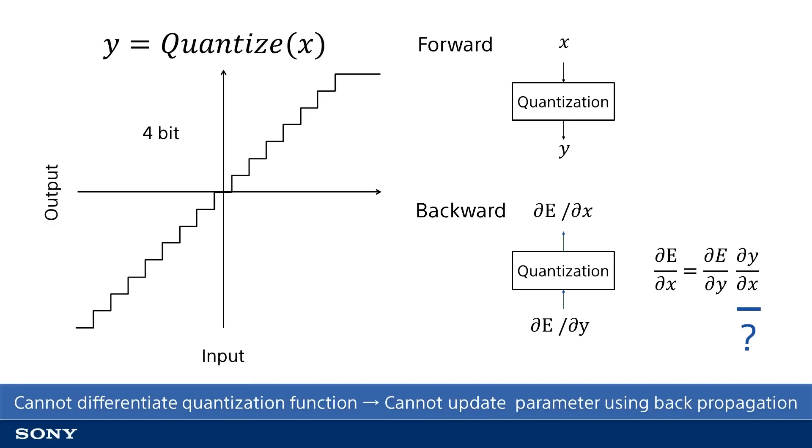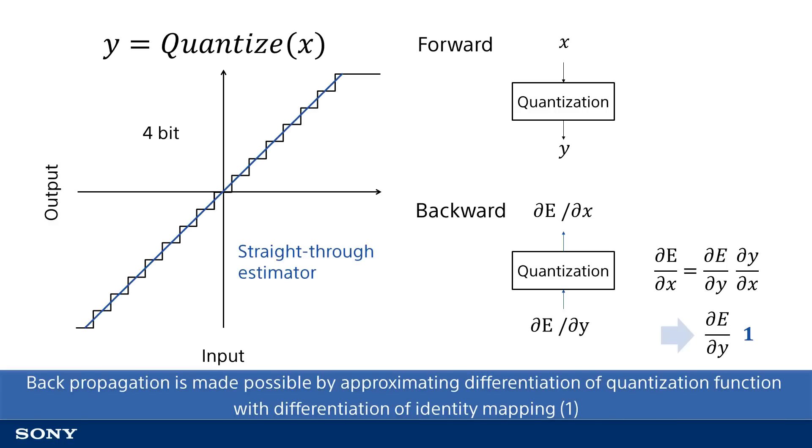The solution to this issue is the technique of using a straight-through estimator to replace differentiation of the quantization function with differentiation of an approximate function. If the approximation of the quantization function is an identity mapping that doesn't really do anything, this differentiation will be one. As such, the gradient returned will be provided to the previous layer as that is the point of quantization. This enables us to perform the training process using backpropagation on neural networks utilizing quantization.